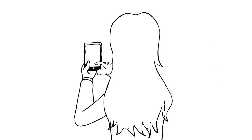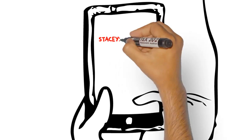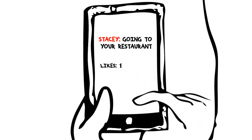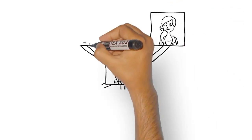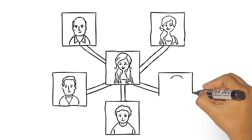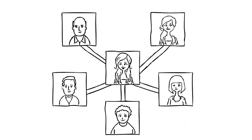Stacey posts a status on Facebook saying that she's going to your restaurant. If she gets at least five likes, she can have a free dessert. You can use Robarto to easily set up this campaign and track its results in just a few minutes.